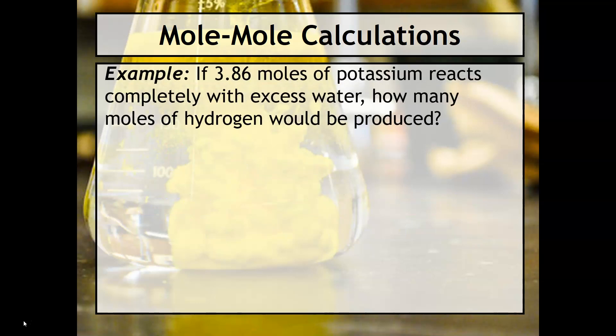So here's an example, very typical stoichiometry calculation. It says if you have 3.86 moles of potassium and it reacts completely with excess water, how many moles of hydrogen would be produced? Just like usual, a really helpful strategy is to start out with that balanced chemical equation.